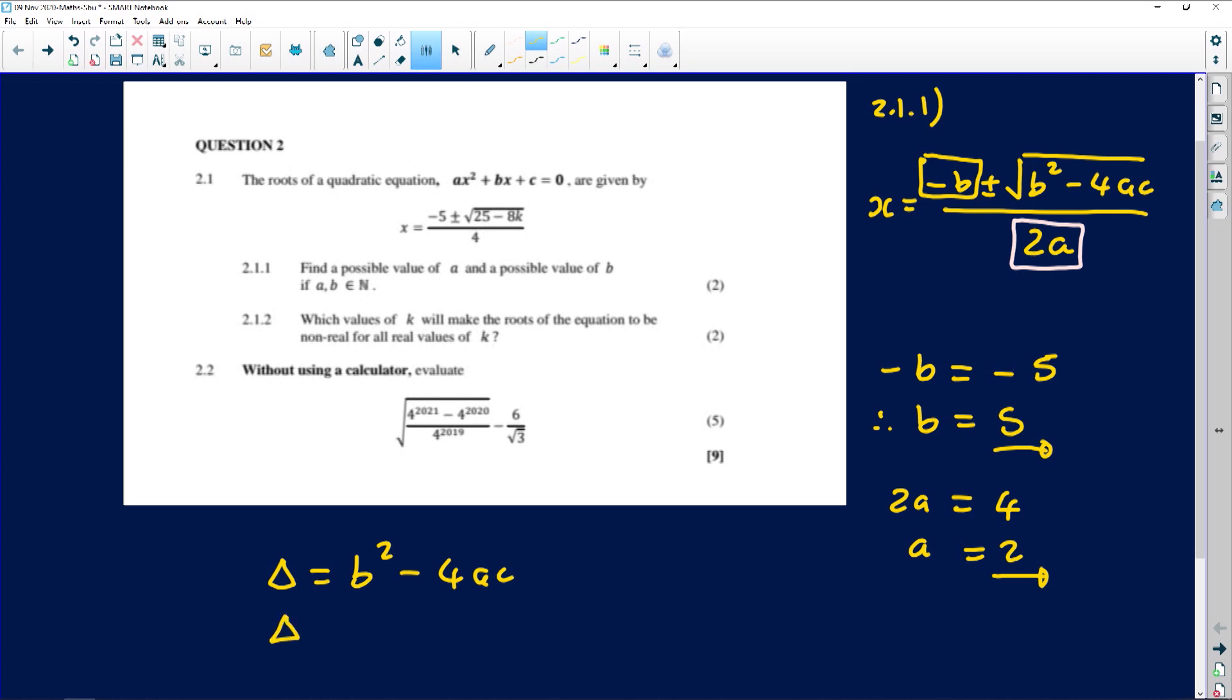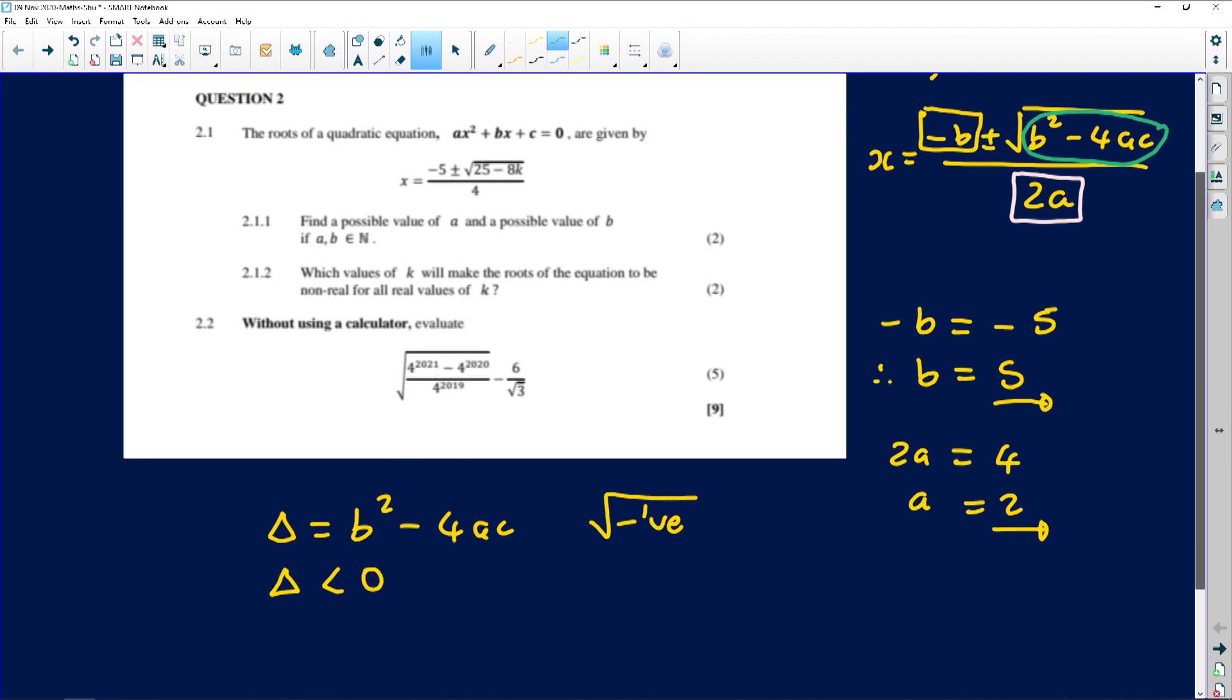If they want values of k that will make the roots non-real, it means whatever you have as your delta value, you just have to put it less than 0. Why? Because if the stuff under the square root sign of the quadratic formula becomes negative, if you're looking for the square root of anything negative, you will not get a real number, you'll get a non-real solution. The b² - 4ac is inside the square root sign of the quadratic formula. So whatever is inside the square root gives the value of the discriminant, your delta.